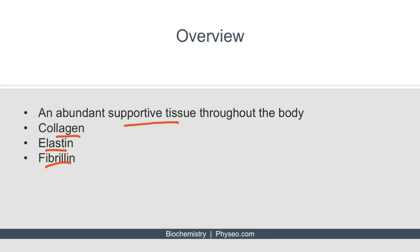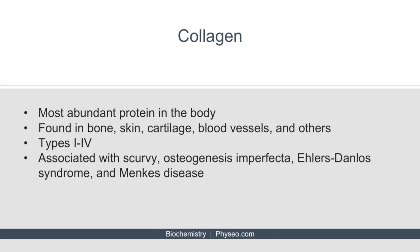Let's discuss collagen first. Collagen is the most abundant protein in the body and can be found in bone, skin, cartilage, blood vessels, and many other organs and tissues.